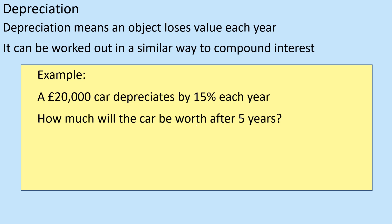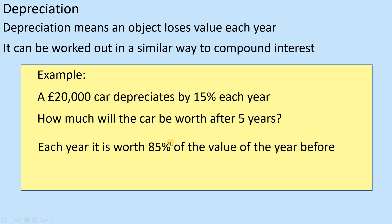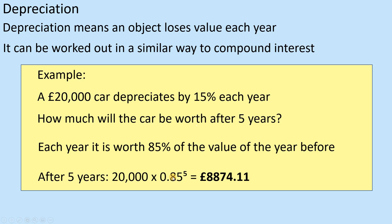A £20,000 car depreciates 15% each year. How much will the car be worth after five years? We're still using the same compound interest idea, and it's still to the power of five — but what matters is the multiplier. It's a decimal multiplier. So I'm going to times it by 85%, which as a decimal is 0.85. So 0.85 is my multiplier to the power of five. When I times by a fraction less than one, the value goes down — 15% year on year. This gives £8,874 after five years — under half price.